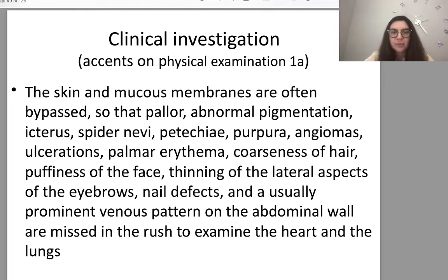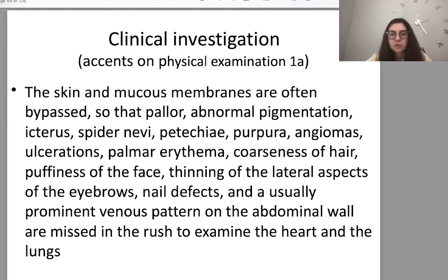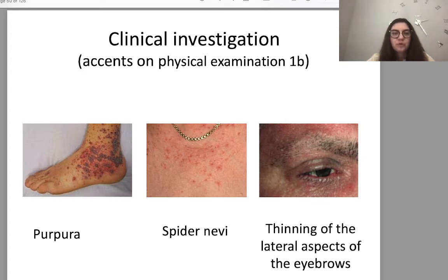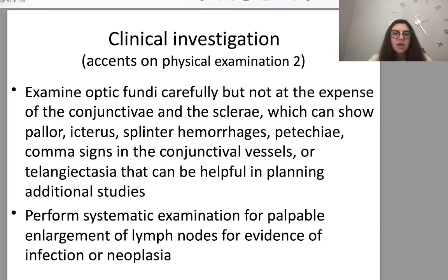On physical examination: skin and mucous membranes are often bypassed. Abnormal pigmentation, icterus, spider nevi, petechiae, purpura, angiomas, palmar erythema, coarseness of hair, puffiness of the face, thinning of the lateral eyebrows, nail defects, and prominent venous pattern of the abdominal wall may all be missed in the rush to examine heart and lungs. Here you see a picture of purpura, spider nevi, and thinning of lateral eyebrows — all typical findings in anemia. Examine optic fundi carefully; the conjunctiva and sclera can show pallor, icterus, splinter hemorrhages, petechiae, or telangiectasia.